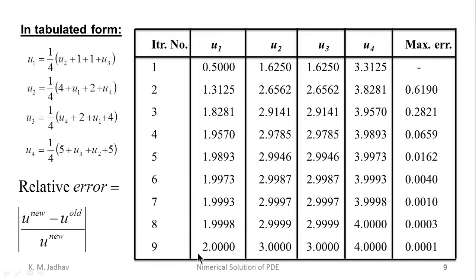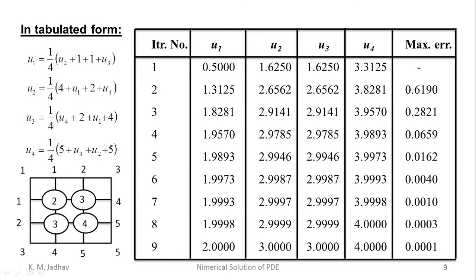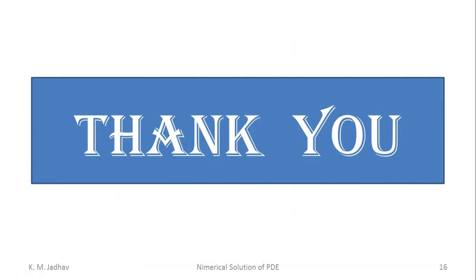Performing one more iteration gives the final converged values: u1 = 2, u2 = 3, u3 = 3, and u4 = 4. Placing these values in the figure at their respective positions, the final solution is u1 = 2, u2 = 3, u3 = 3, u4 = 4. In this way we can solve problems based on the Laplace equation using the finite difference method. Thank you for watching.